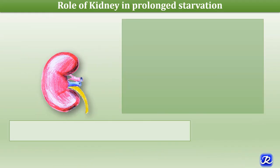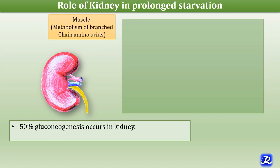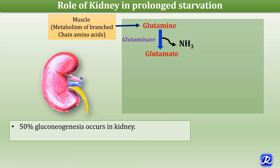In prolonged starvation, 50% of gluconeogenesis occurs in the kidney, which has all the enzymes of gluconeogenesis including glucose-6-phosphatase. In muscle, metabolism of branched-chain amino acids releases glutamine, which is taken up by the kidney. Glutaminase converts glutamine to glutamate with release of ammonia, and then glutamate dehydrogenase forms alpha-ketoglutarate, which acts as a precursor for gluconeogenesis.